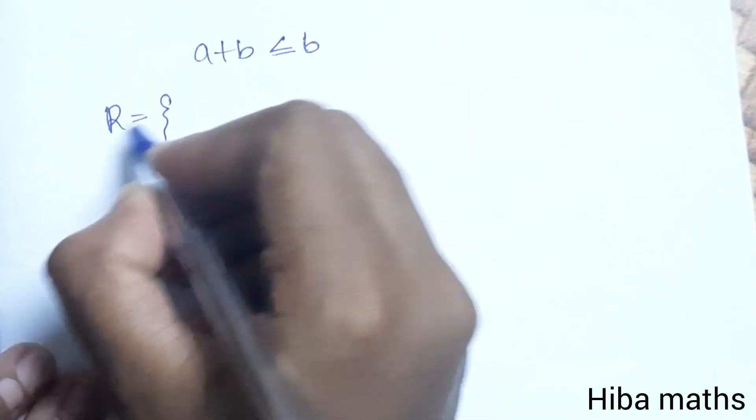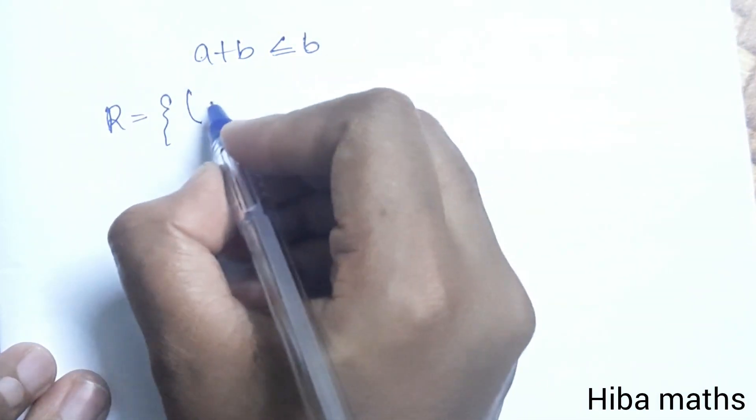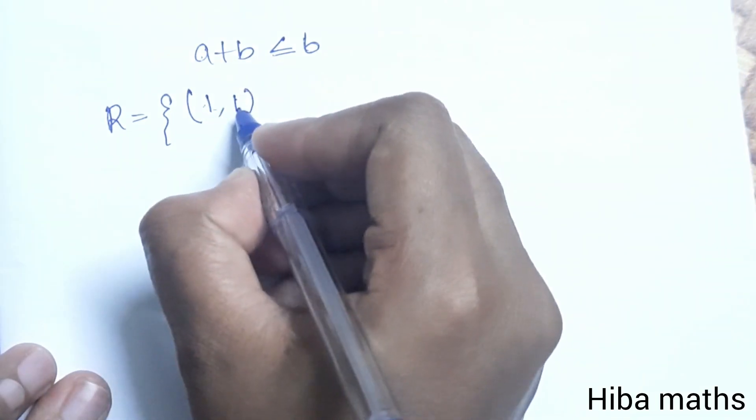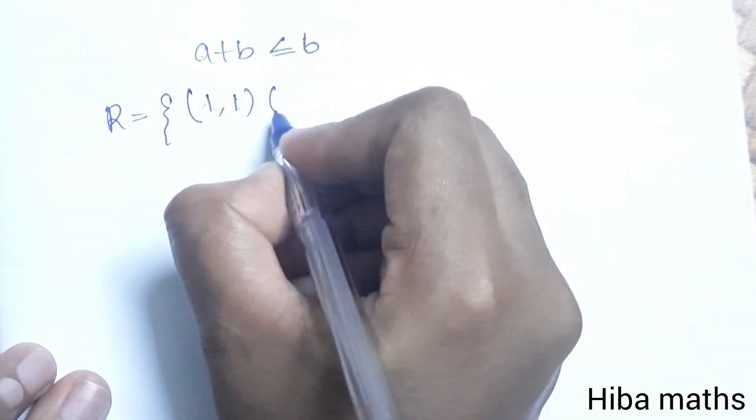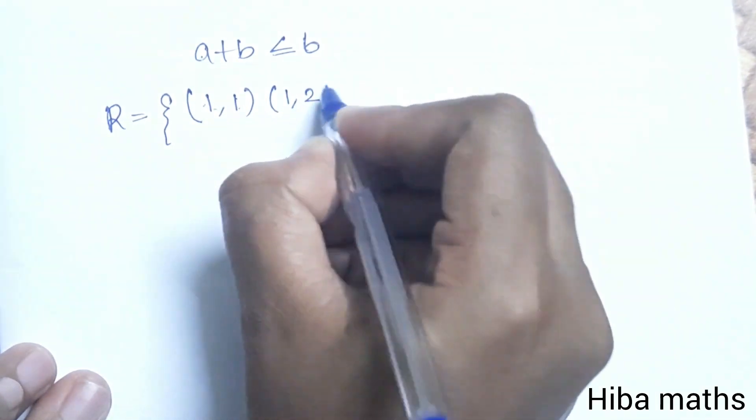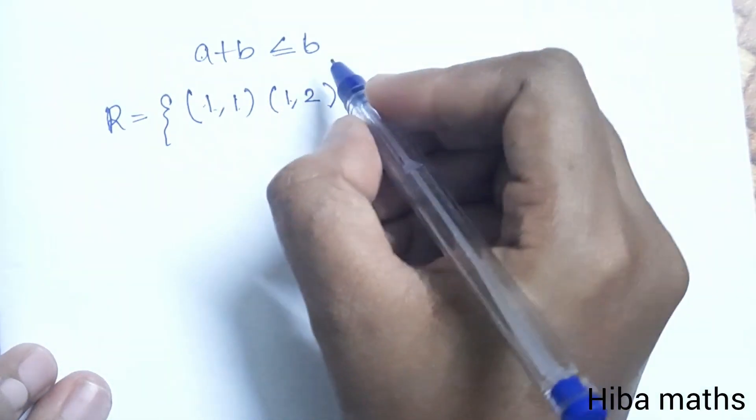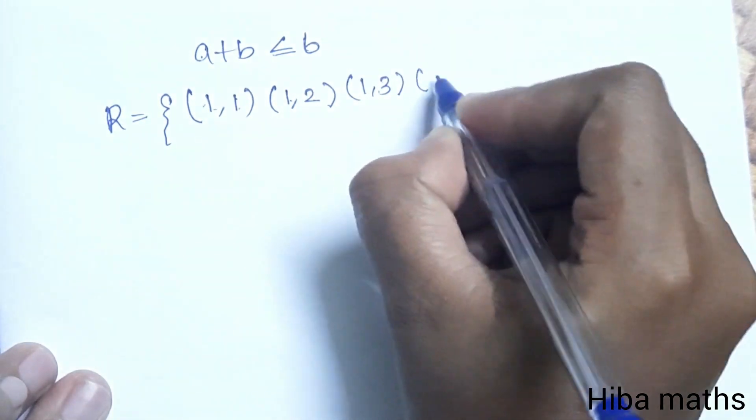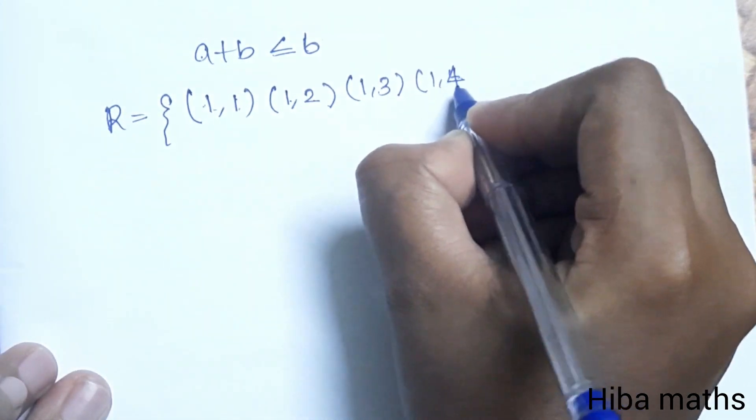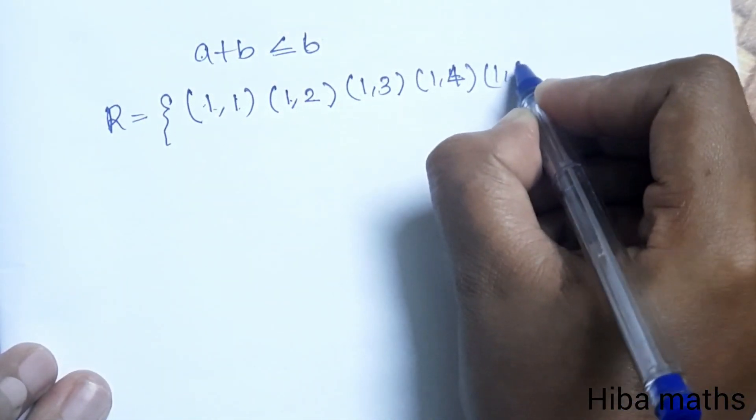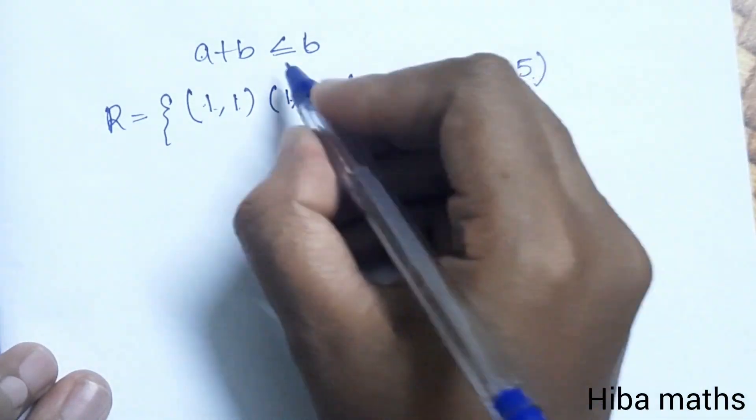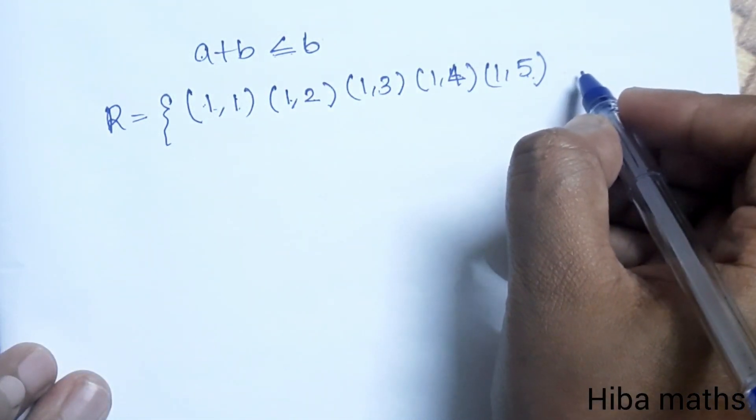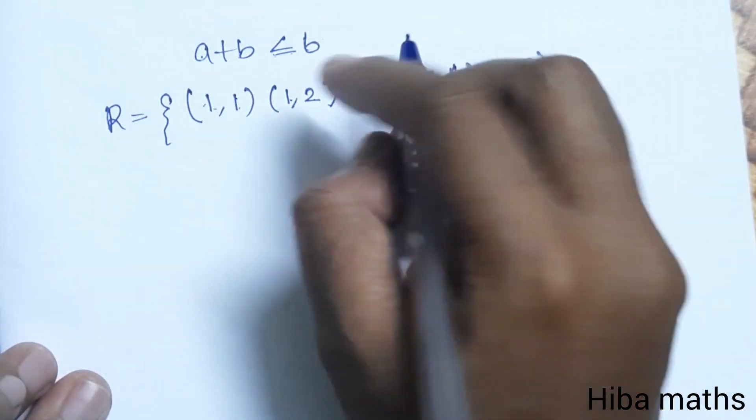Now (1,1): 1 plus 1 is 2, which is less than or equal to 6. (1,2): 1 plus 2 is 3, less than or equal to 6. (1,3): 1 plus 3 is 4, less than or equal to 6. (1,4): 1 plus 4 is 5, less than or equal to 6. (1,5): 1 plus 5 is 6, equal to 6.